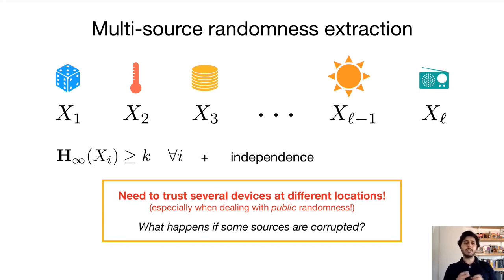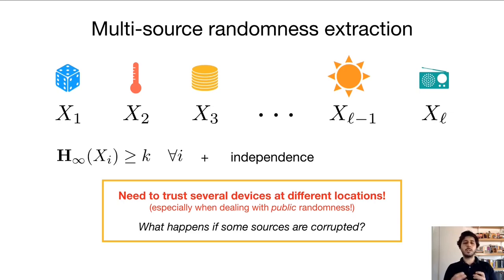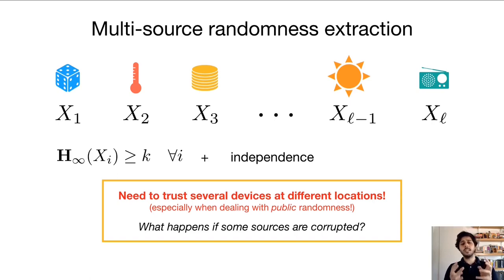The starting point for this work is the question of what happens, or what can we still achieve, if some of these sources are corrupted by an adversary. In this case, we lose the guarantee of independence, and we also lose the general lower bound on the min entropy, because sources that are adversarially corrupted may even have zero bits of min entropy. What we'll see for the rest of the talk is first how to model this adversarial setting, and then we'll discuss randomness extraction.